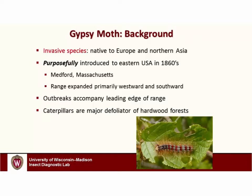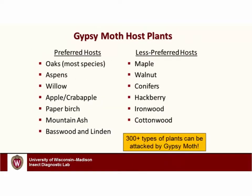Typically when we get this insect moving, we tend to get outbreak conditions on the leading edge of the invasion front — that is where we have massive defoliation of wooded areas. The caterpillars have chewing mouthparts which function just like a pair of scissors or pliers. If you've got millions of these caterpillars in a small area, they're going to completely defoliate those trees, which can really stress the trees and make them more susceptible to other insects or diseases.